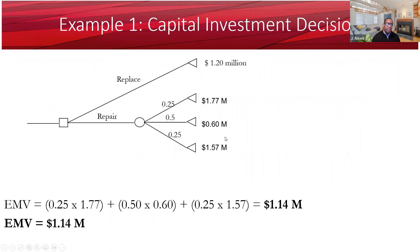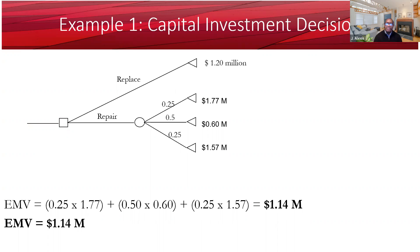Let's say you are contemplating replacing a piece of equipment in your factory. You have the choice between purchasing a new one or repairing it. The cost to replace it is going to be 1.2 million, but the cost of repairing it is uncertain. The repair firm told you there is a 25% chance it may cost 1.77 million, a 50% chance it may cost 0.6 million, and a 25% chance it may cost 1.57 million.